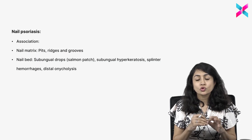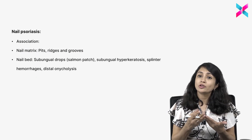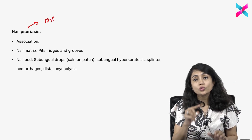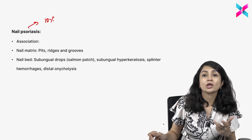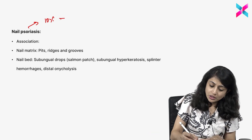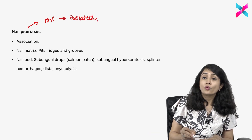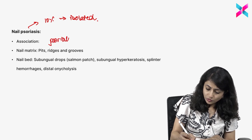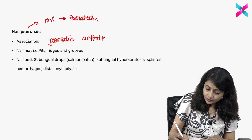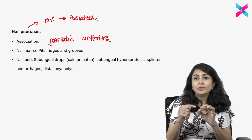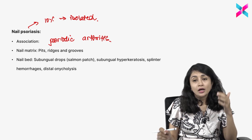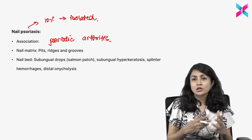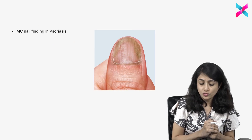Psoriasis can affect the nails also. Sometimes you have psoriatic lesions on the body along with nail changes, but in about 10% of patients there may be only nail involvement. You need to know the typical nail findings in psoriasis to identify nail psoriasis. Nail psoriasis is important because when it is present, there is an association with psoriatic arthritis. Nail psoriasis can affect either the matrix or the nail bed.